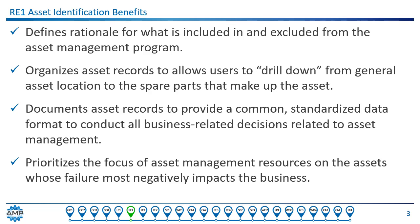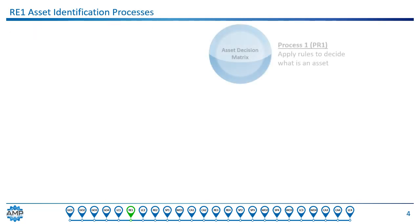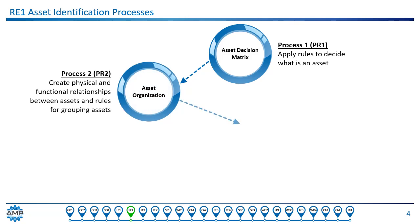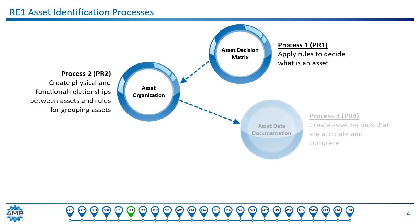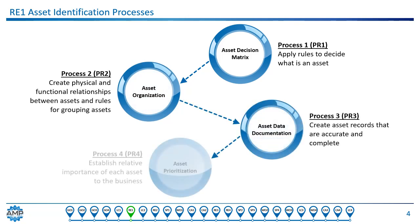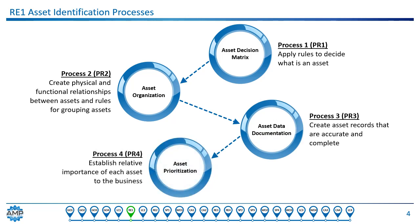Prioritizing the assets allows us to focus our resources on what is important to the business. The idea is to use our resources effectively by directing them at the most important assets in terms of failure consequence. The processes we use in asset identification follow the benefits, and there are four of them within this function — they are sequential.